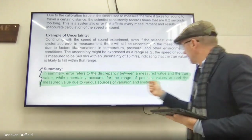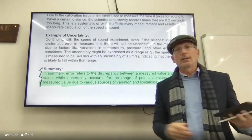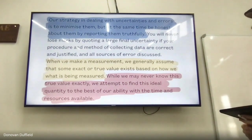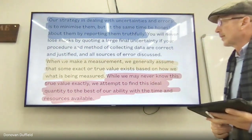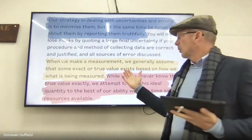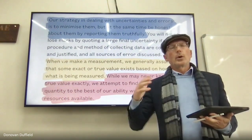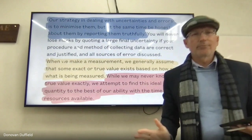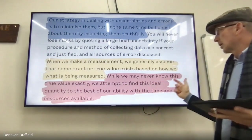Even when you talk about the true value, there's uncertainty in it — there's no absolute certainty in any measured value. Our strategy in dealing with uncertainties and errors is to minimize them, but also to be honest about them by reporting them truthfully. We generally assume some exact true value exists, but we will never know it exactly; we attempt to find this ideal quantity to the best of our ability with the time and resources available.